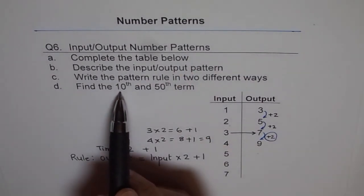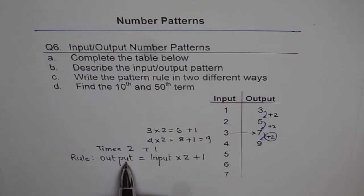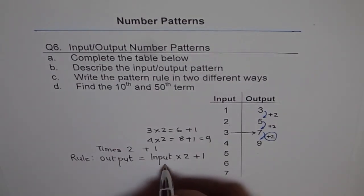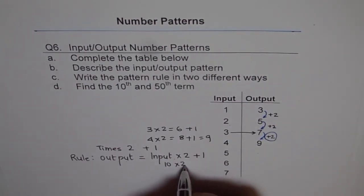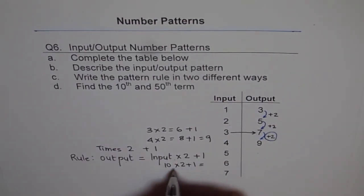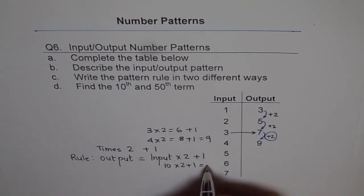And how are we getting 10th and 50th term? We'll use this. Same formula. So for 10th term, it will be 10 times 2 plus 1. 10 times 2 is 20. 20 plus 1, 21. For 50th term,